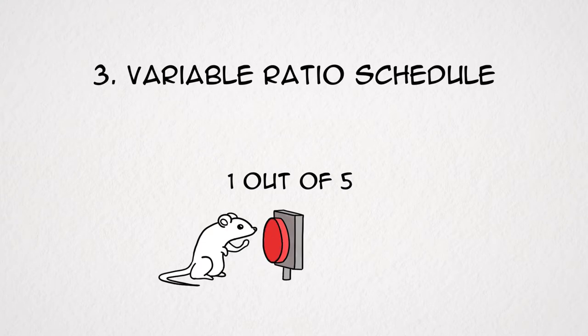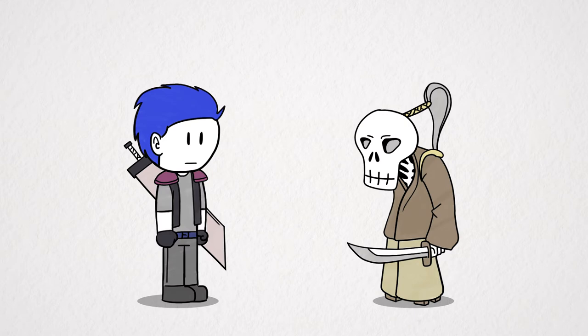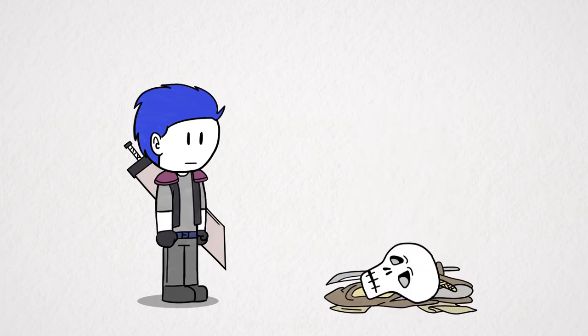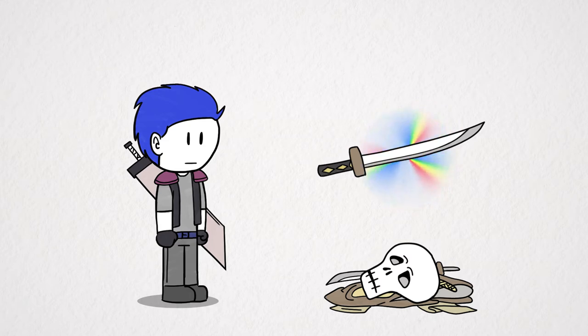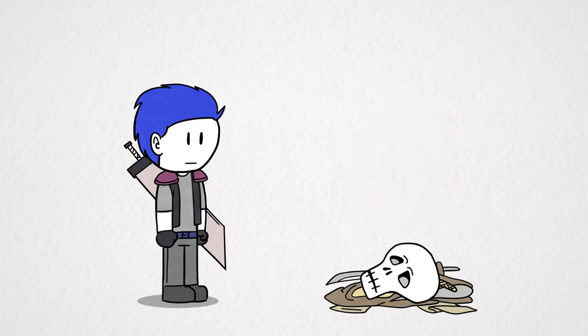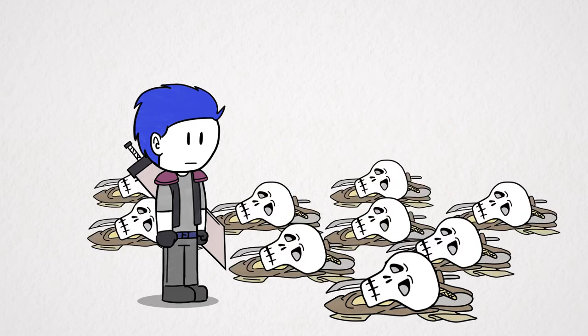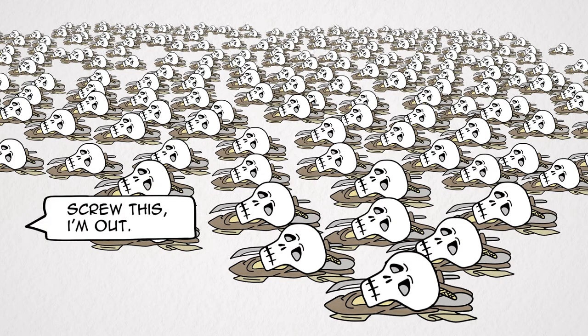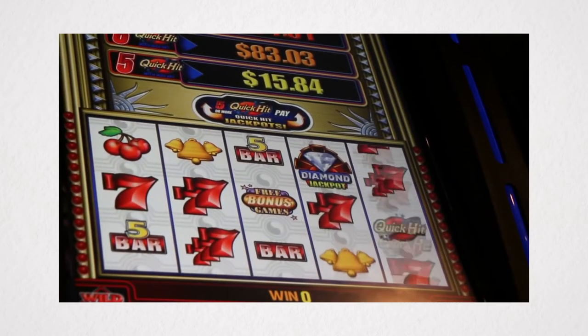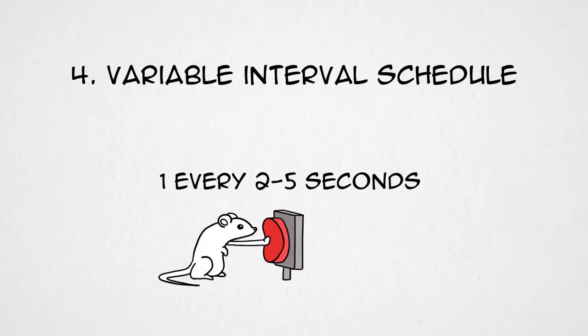3. Variable ratio schedule. Wherein a reward is given after a random number of button presses. See that bone samurai? Well, the first time you kill it, it could very well drop its own sword. I mean, it's true in theory. Cause it's a 0.01% chance. That's 1 in 10,000. Unfortunately, this also means that you could get it in your 20th kill. Your 150th. Your 9001st. Which means you better keep pressing. The next one could be a jackpot.